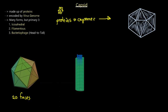Next we have the filamentous structure. As you can see, proteins are formed in a linear, thin, thread-like rod or helical shape. All of these little molecules of genetic material are encoded inside these filamentous capsids.